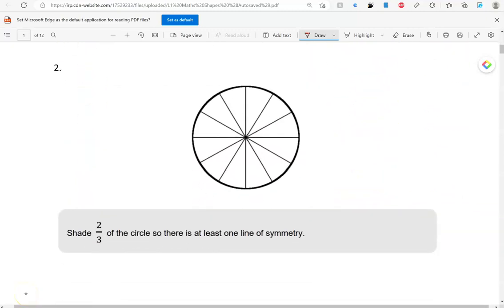Shade two-thirds of the circle so that there is at least one line of symmetry. Right, let's count them. We've got 1, 2, 3, 4, 5, 6, 7, 8, 9, 10, 11, 12 slices. So, two-thirds of that will be 12 divided by 3, which is 4, and then 4 times 2, which is 8.